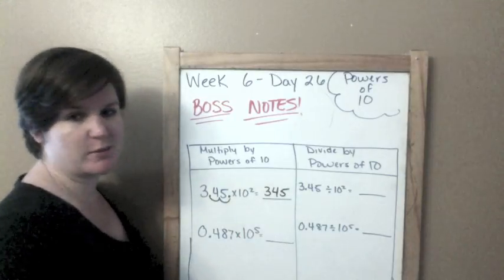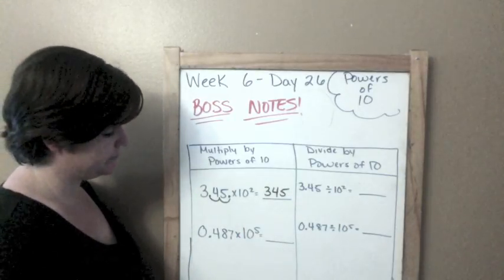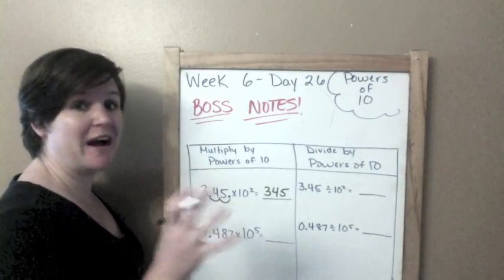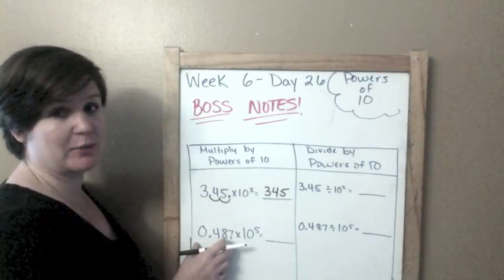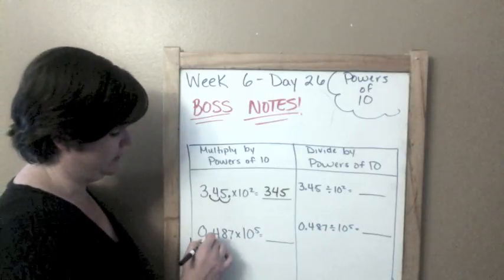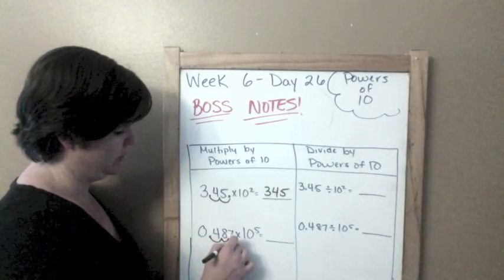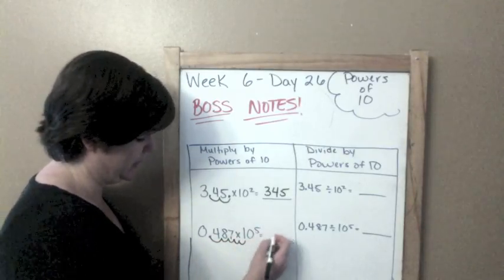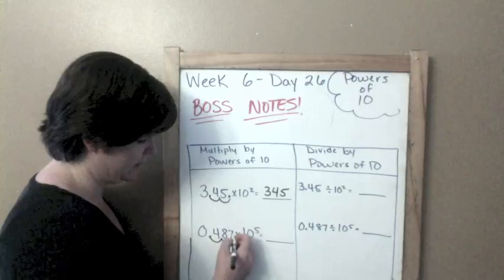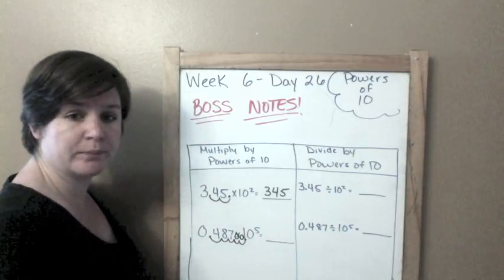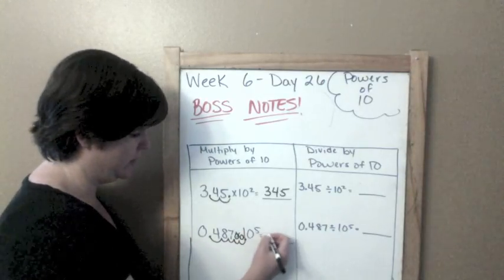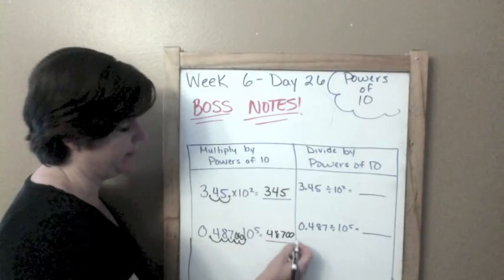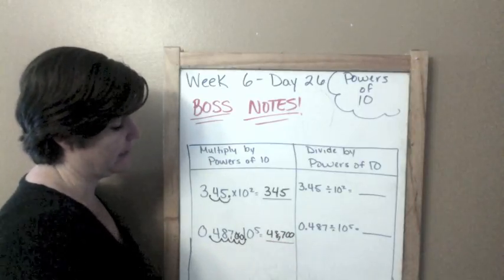I could put a decimal but I don't really need it. For this one we're doing times 10 to the fifth power, so I need five hops making this bigger because we are multiplying. To the right: one, two, three, four, five. I've got a zero here and a zero here, so that would be 48,700.